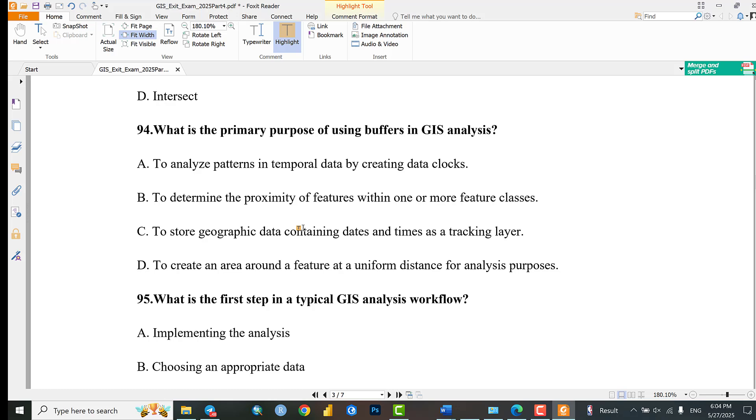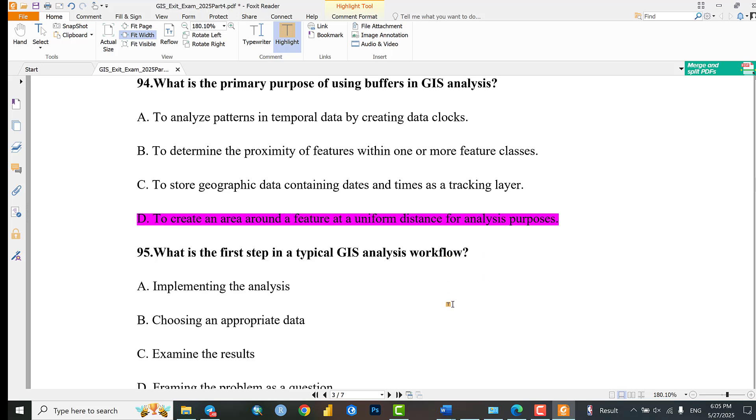Question 94: What is the primary purpose of using buffers in GIS analysis? Options include analyzing patterns in temporal data, determining the proximity of features, storing geographic data, or creating an area around the feature for analysis purposes. The answer is to create an area around the feature for analysis.